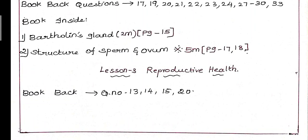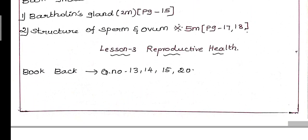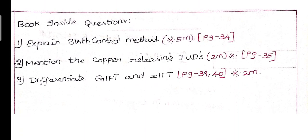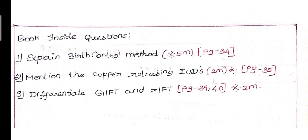Next, third lesson: Reproductive Health. This is a book back - questions 13, 14, 15, 20. First, explain birth control methods. This is a question, first 5 mark question, page number 34. There are two methods: natural method, barrier method. Two methods, important, 5 mark question.